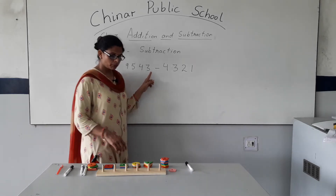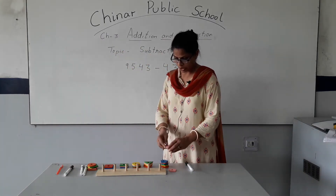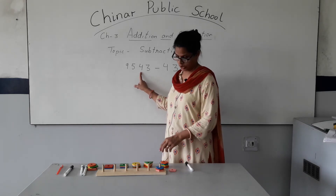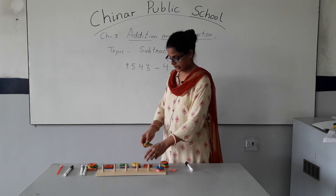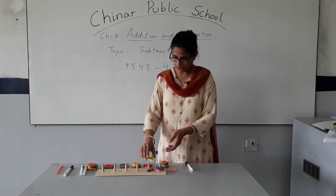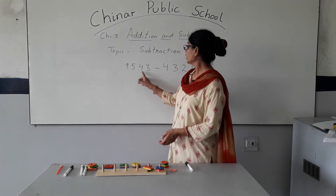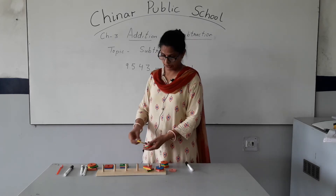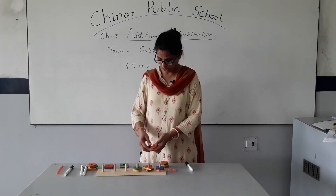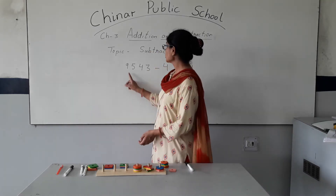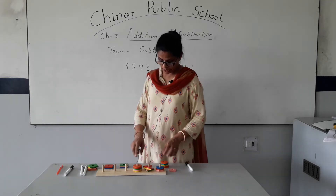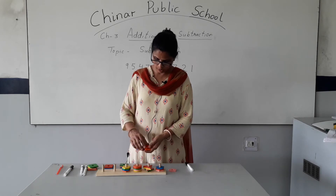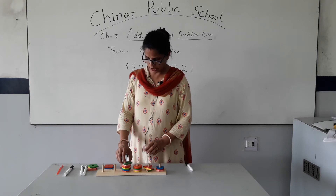On the ones place, the number given is three. So I put three here — one, two, three. On the tens place, the number is four, so I arrange four markers: one, two, three, four. On the hundreds place, the number is five, so I arrange five circles: one, two, three, four, five. On the thousands place, the number is nine, so I arrange nine: one, two, three, four, five, six, seven, eight, nine.